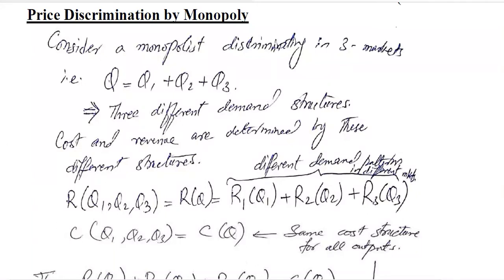Out of the market structures, one of the strongest is monopoly, where there is one seller with maximum market power that can charge different prices in different markets, which is known as price discrimination.